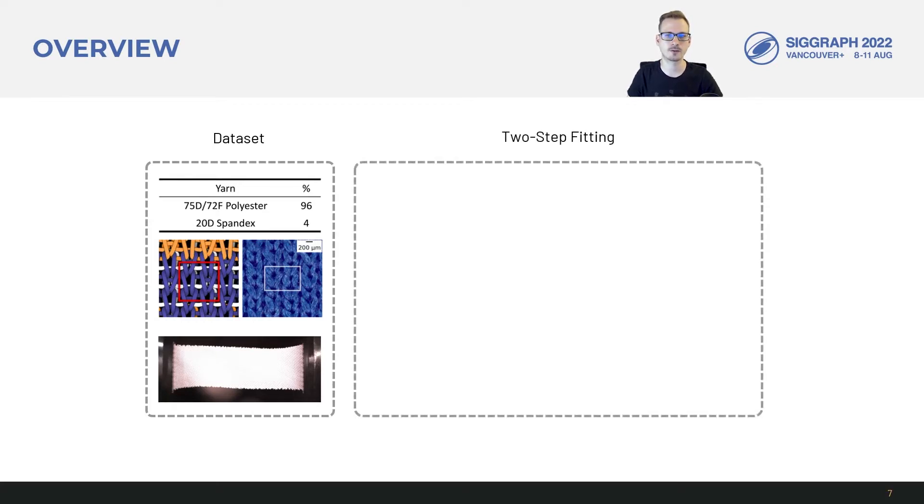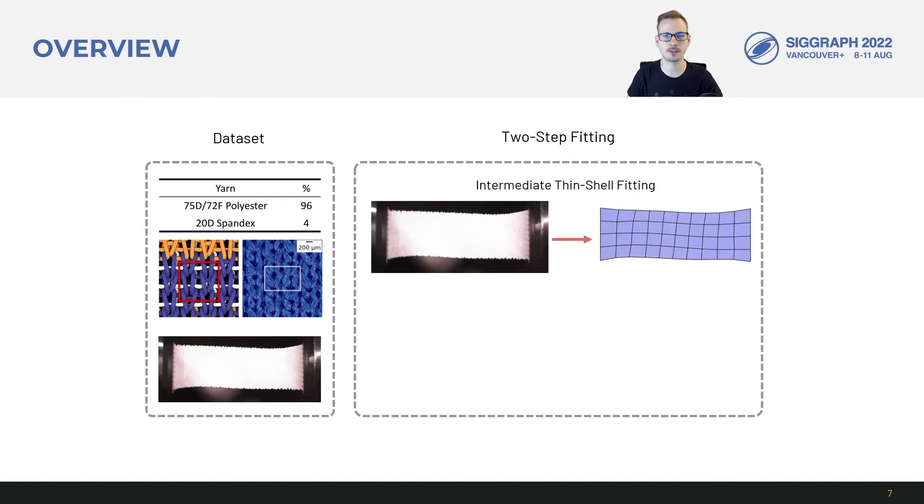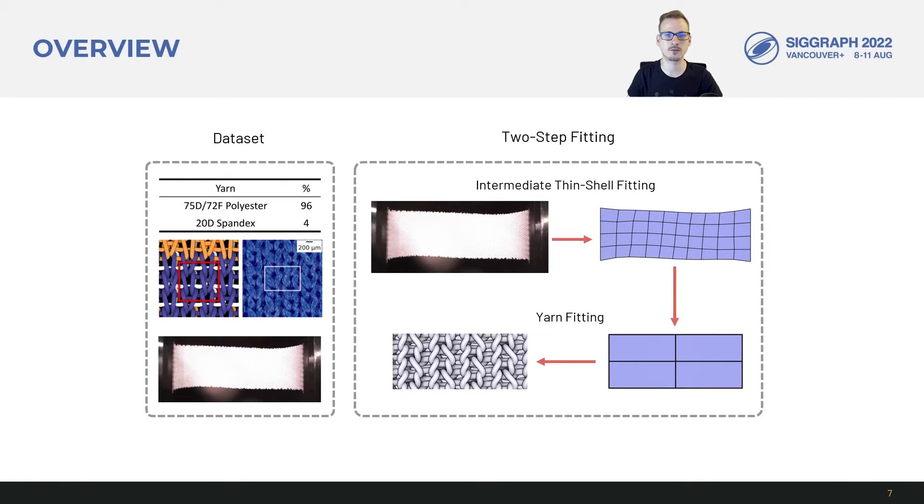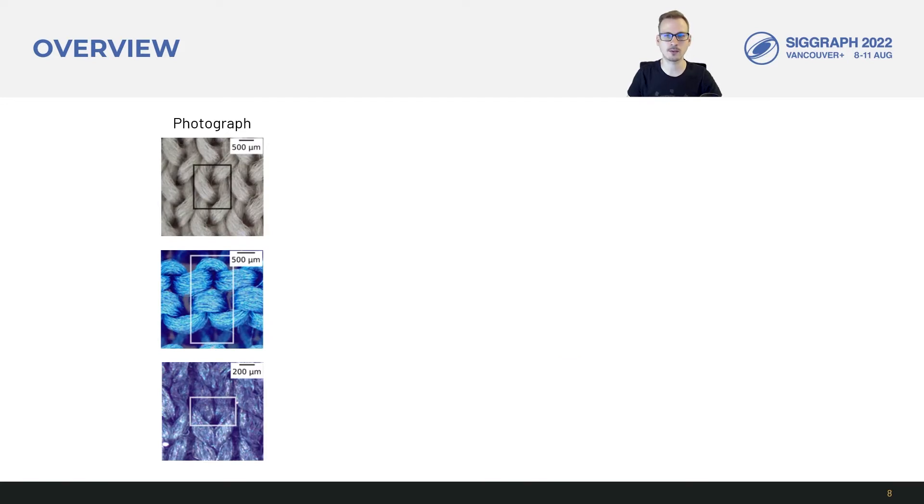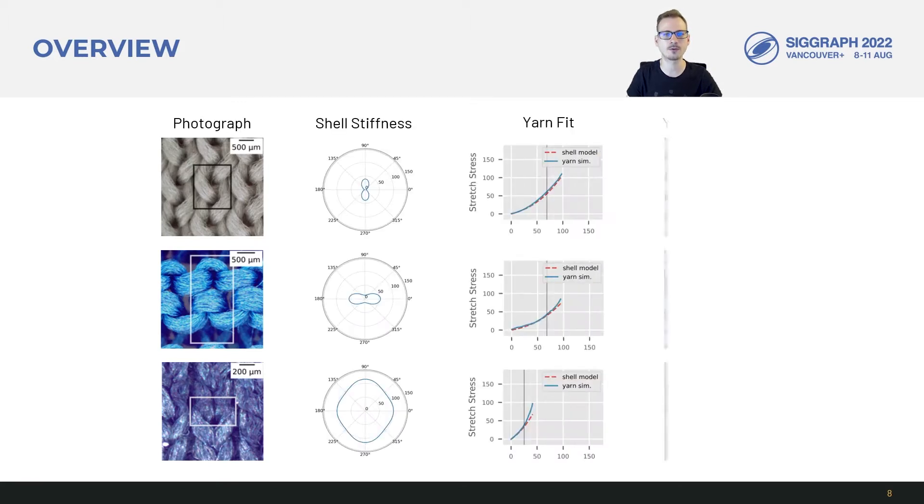Second, we introduce a two-step fitting procedure based on homogenization. We fit an intermediate shell model to the fabric data and use it to fit a modified yarn model in a computationally feasible way with small-scale periodic simulation. This way, we succeed in automatically and quantitatively capturing the fabric-level response of a wide range of knit fabrics spanning different stiffnesses and anisotropies through yarn simulation.